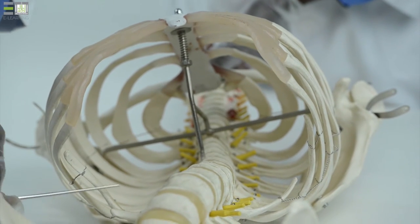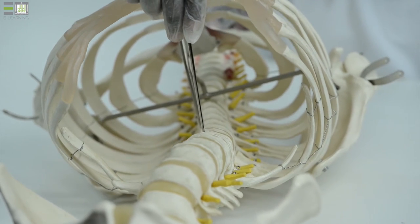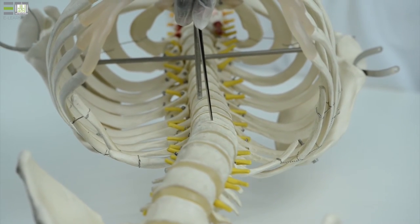The floating ribs on both sides and the body of the twelfth thoracic vertebra posteriorly.